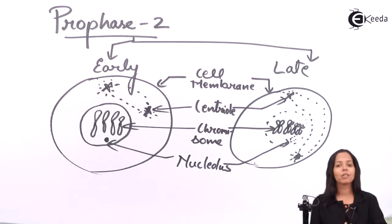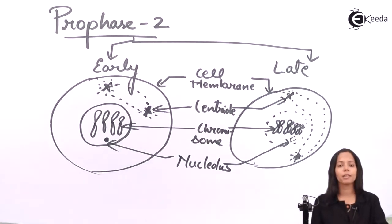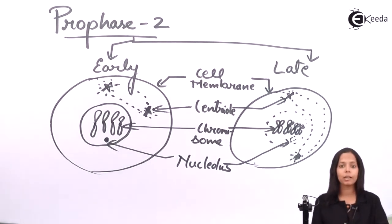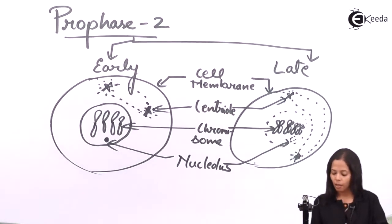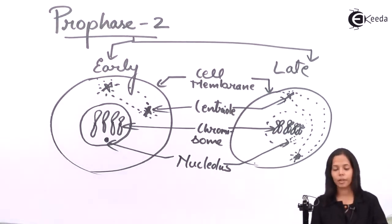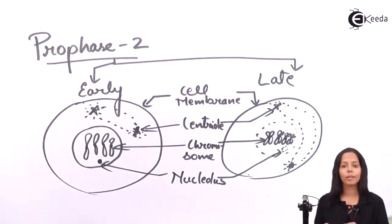Also, the centrioles start dividing in early prophase 2, but in late prophase 2 they begin moving towards the polar region. You also have to remember that the nucleolus is getting disappeared in prophase 2. So here is the summary for prophase 2.